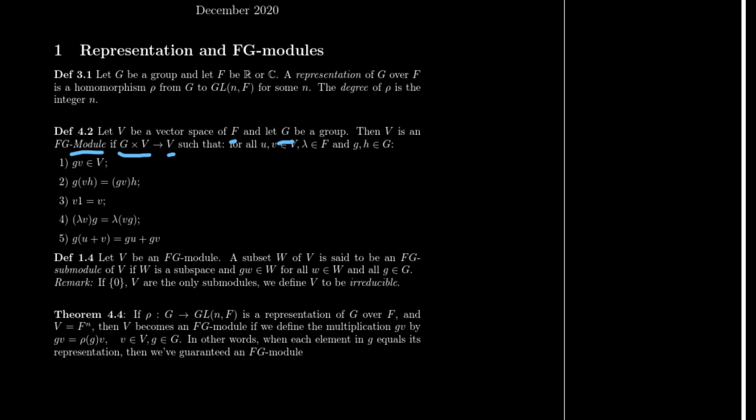The first property is we can take any member of the group and put it inside the vector space as well. We are able to do associativity over the members of the group. There is an identity element for any kind of scalar in the field. The scalar also has associativity. And finally, there's a distribution property in the multiplication.